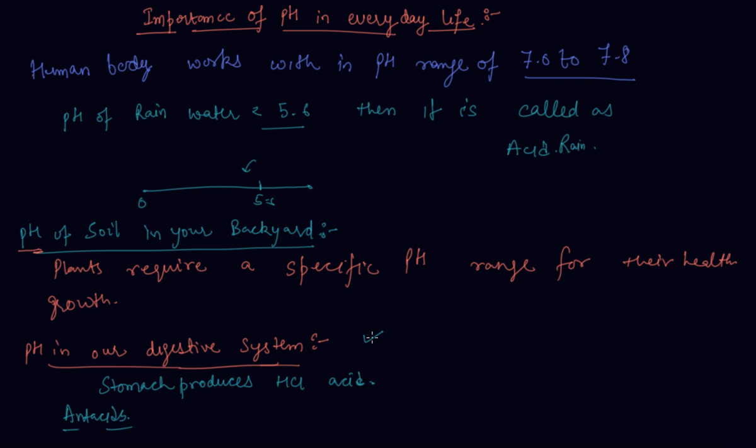In a lot of places pH will come into picture like in tooth decay. The pH of the mouth should not be below 5.5. If it is below 5.5 our tooth starts decaying. So that is why the pH of the mouth should not be less than 5.5.